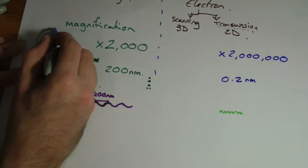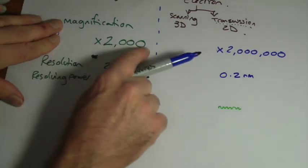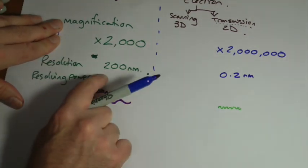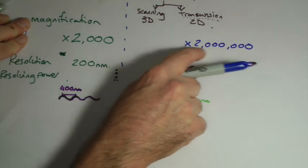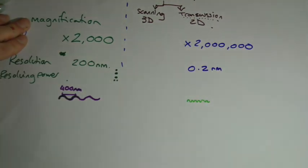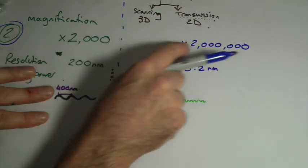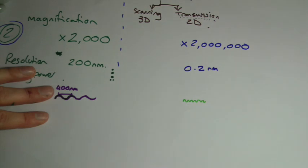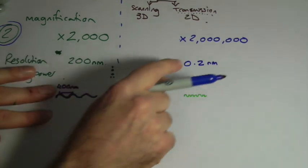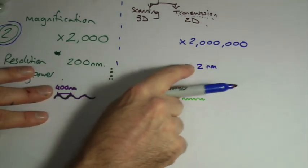But notice here, that's why I said, pay attention to that number two. 2000 magnification, 200 nanometers, 2 million magnification, 0.2 nanometers. Those are the numbers to look at. So you can get a thousand times bigger magnification, a thousand times smaller resolution. And it's this that limits your magnification.